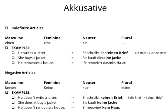Now let's look at the negative article. The negative article is 'kein,' and in case of masculine nouns it will have the ending 'en' again, so it is not 'kein' but rather 'keinen.' For feminine nouns it's 'keine,' for neuter it's 'keine,' and for plural it's also 'keine' — the same pattern as with indefinite articles.